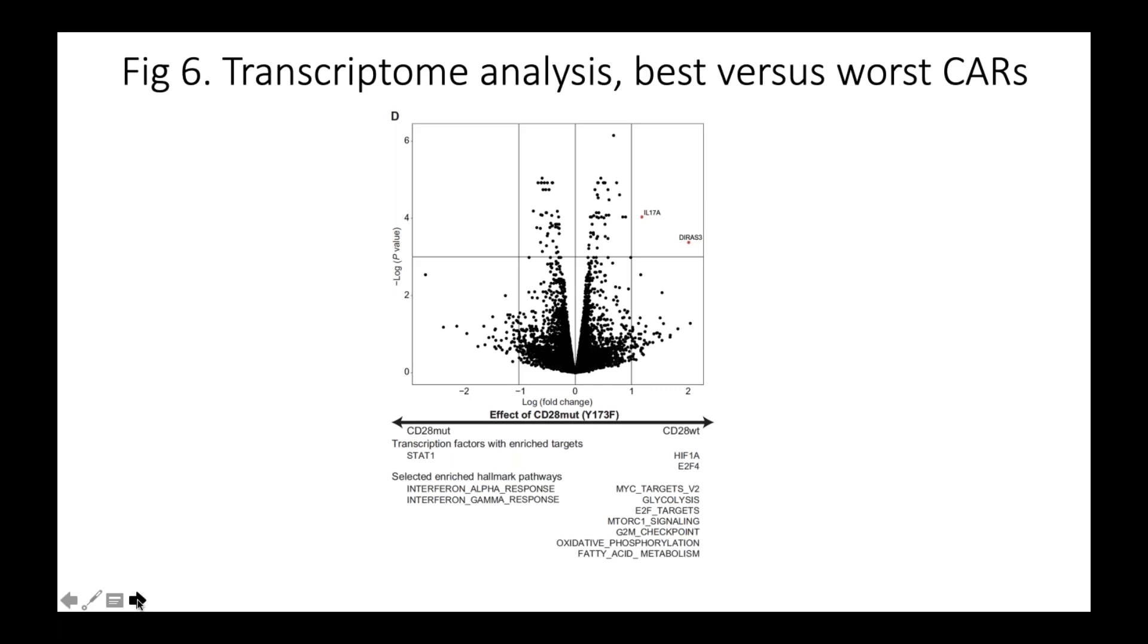Trying to figure out what transcriptionally made a good CAR versus a bad CAR was a little bit more challenging. What consistently they came up with is that the bad CARs always seem to be enriched in interferon hallmark pathways, and the good CAR always seem to be enriched in metabolic-type pathways. So suggesting that really what's important from the CD28 wild-type CAR is that this CAR is required to get the cells into a good metabolic state that allows them to divide and proliferate and presumably survive in vivo.